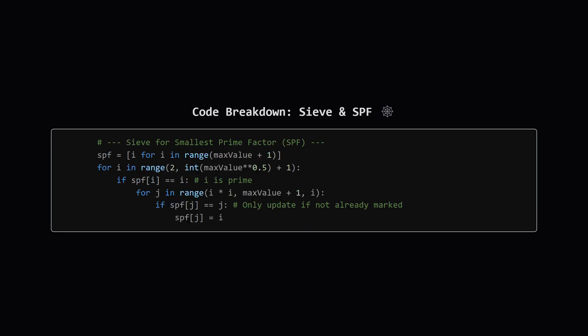Next, we run a standard sieve algorithm. This version is designed to find the smallest prime factor SPF for each number up to maxValue. For example, SPF[12] would be 2, SPF[14] would be 2, and SPF[35] would be 5. This SPF array is crucial for efficiently breaking down numbers in the next step.